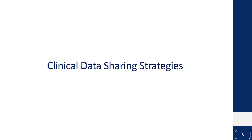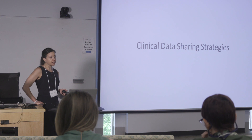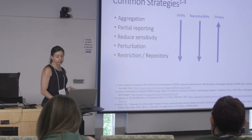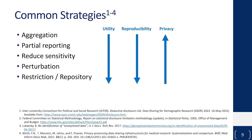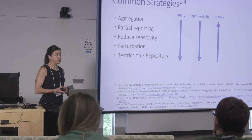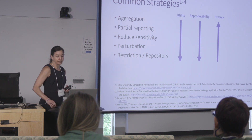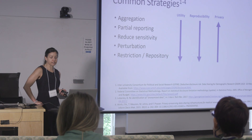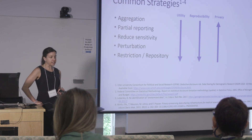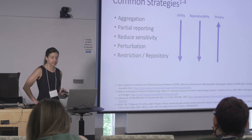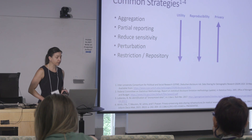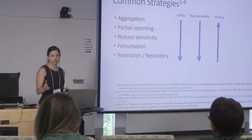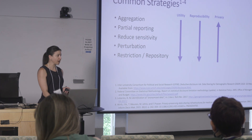To protect the privacy of people in the dataset given the risk of deductive disclosure, there are several strategies commonly employed for clinical data sharing, though they may not work as well on relational data. Any strategy for data sharing has to balance utility, reproducibility, and privacy. Utility addresses the richness of the data for people who want to repurpose it for secondary analyses. Reproducibility ensures the rigor of published analyses — one of NIH's big pushes in recent years. And of course, privacy of the cohort is the key concern. I'll go through how this balance tips for relational data.